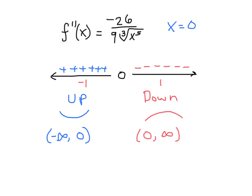We know it wouldn't be changing, otherwise we'd find other zeros or undefined values. So this function is concave up from negative infinity to zero and concave down from zero to infinity. Good luck.